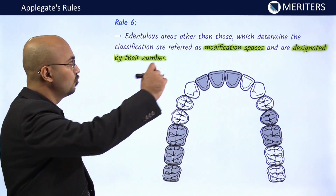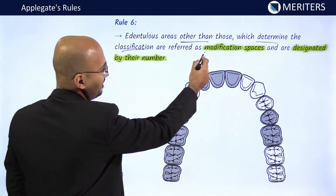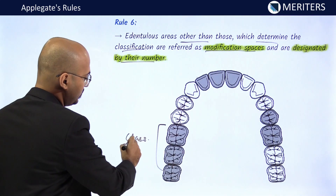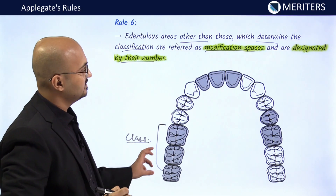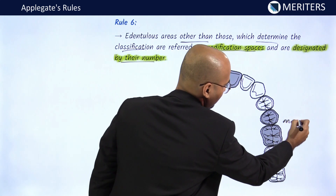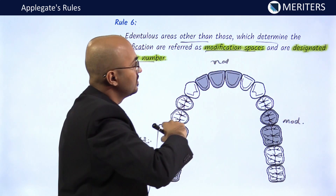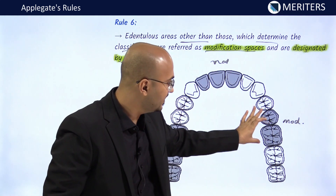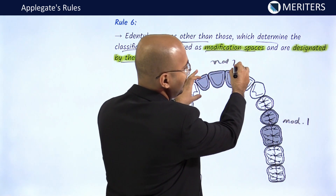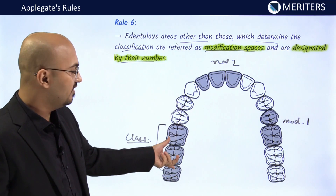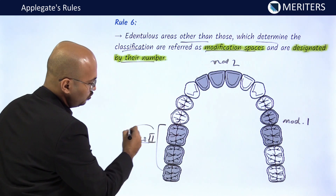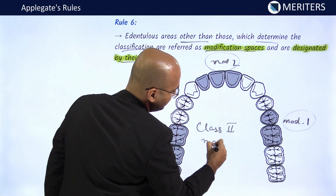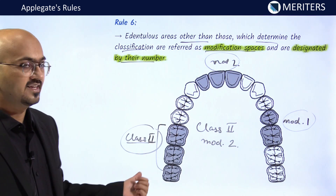Applegate's Rule Number 6: edentulous areas other than those which determine the classification are called modification spaces and are designated by number. For example, the posterior-most area is the class, and the other edentulous areas are modification spaces. If there are two additional spaces, they are designated Modification 1 and Modification 2. So a case with a unilateral distal extension and two additional spaces becomes Kennedy's Class 2 Modification 2.